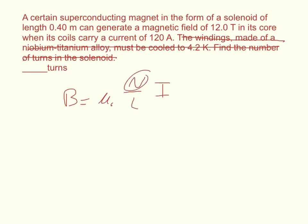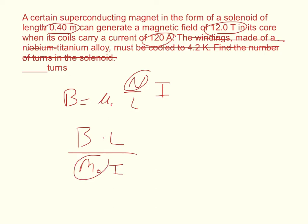Now we want to solve for N, so we get N = B times L over mu-naught times I. Everything is already in SI units: length 0.4, magnetic field 12, current 120. Plugging in the permeability of free space, 1.25664 times 10 to the negative 6, the number of turns is equal to 31,830.99.